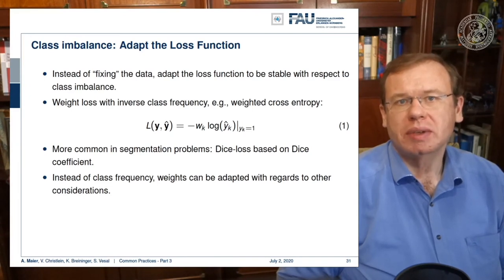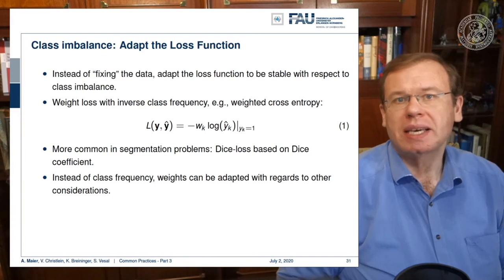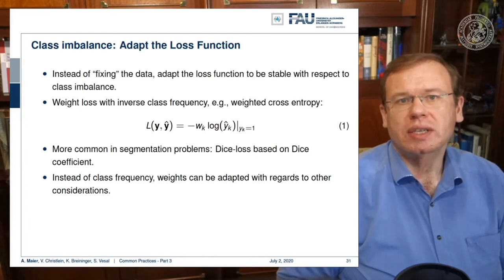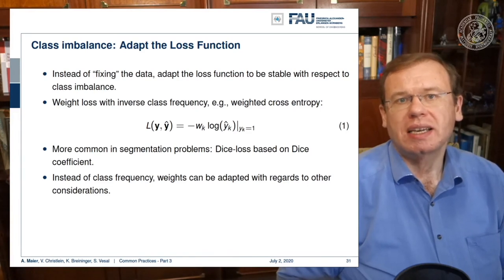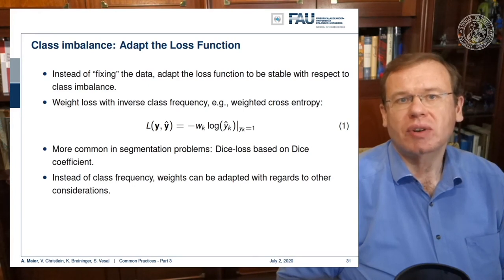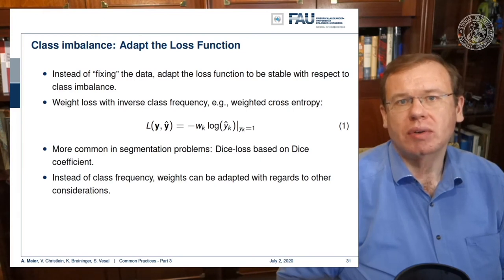More common in segmentation problems are things like the dice loss, based on the dice coefficient. Here you adjust the loss according to the area overlap — it is a very typical measure for evaluating segmentations. Instead of class frequency, weights can also be adapted with regard to other considerations, but we are not discussing those here.